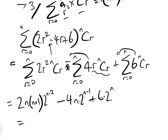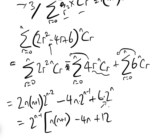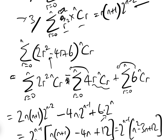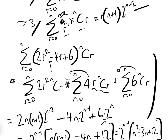Tidying all of this up, we factor out two to the N minus one, giving us two to the N minus one times N squared minus three N plus twelve. And that is the solution to this summation.